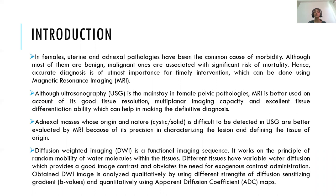In females, uterine and adnexal pathologies are a common cause of morbidity. Although most of them are benign, malignant ones are associated with significant risk of mortality. Hence, accurate diagnosis is of utmost importance for timely intervention, which can be done using MRI. Although USG is the mainstay in female pelvic pathologies, MRI is better on account of its good tissue resolution, multiplanar imaging capacity, and excellent tissue differentiation ability. Adnexal masses whose origin and nature are difficult to detect on USG are better evaluated by MRI because of its precision in characterizing the lesion and defining the tissue of origin.